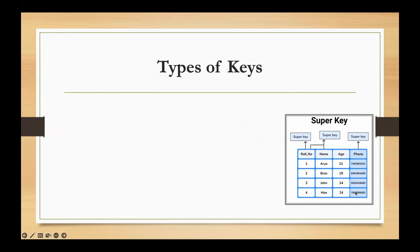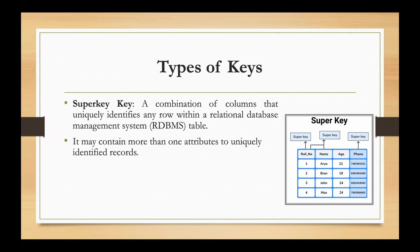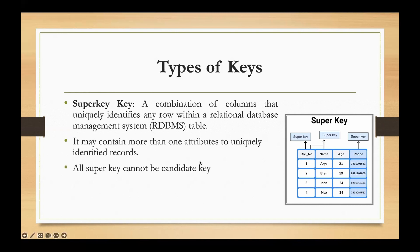Super key: a super key is a combination of columns that uniquely identify any row within a relational database management system. It may contain more than one attribute to uniquely identify a record. Sometimes more than one column is required to uniquely identify a record in a relational database management system.